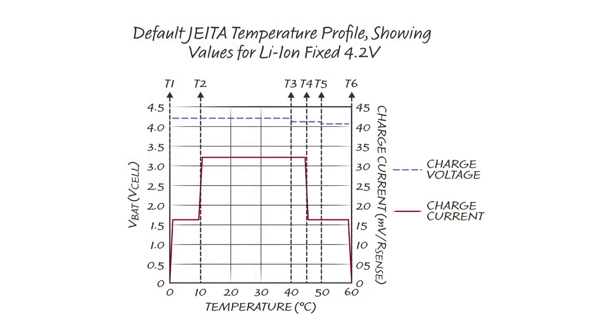An example of this programmability can be seen in the optional JATA temperature profile. Seven distinct temperature regions are programmed by six set points. In five of the regions, independent charge voltage and charge current values can be programmed. The outer two, too hot and too cold, do not allow any charging. The JATA charge profile shown here can be used as is or adjusted as needed.